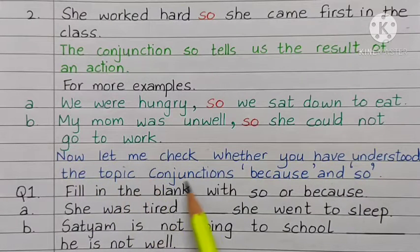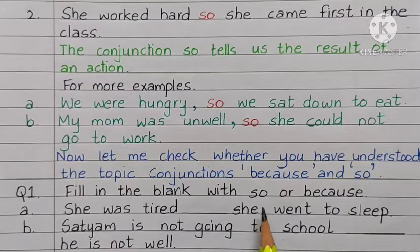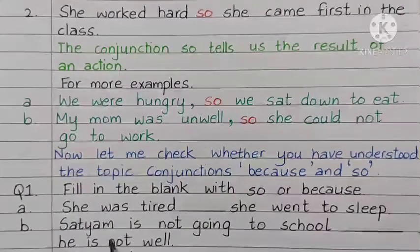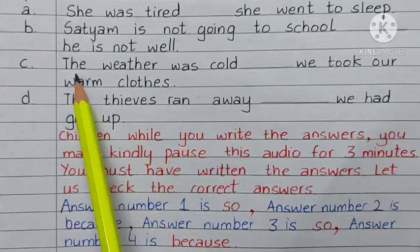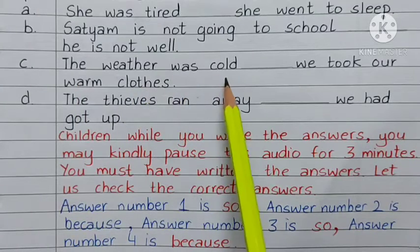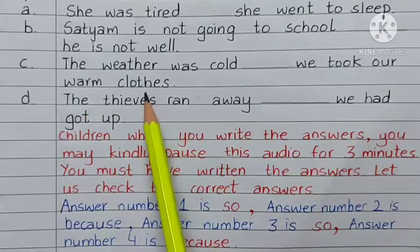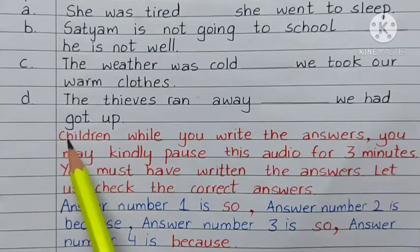Now let me check whether you have understood the topic — conjunctions 'because' and 'so'. Fill in the blank with 'so' or 'because'. One: She was tired — dash — she went to sleep. Two: Satya is not going to school — dash — he is not well. Three: The weather was cold — dash — we took our warm clothes. Four: The thieves ran away — dash — we had got up.